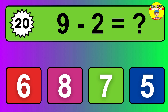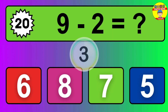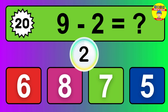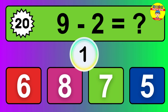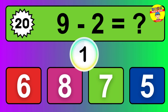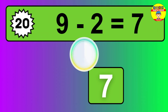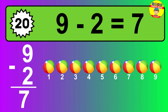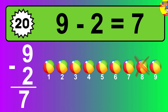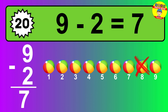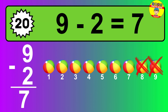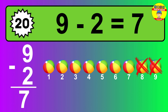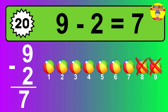Question 20. 9 minus 2 equals what? The answer is 9 minus 2 is 7. Let's count it: 1, 2, 3, 4, 5, 6, 7.